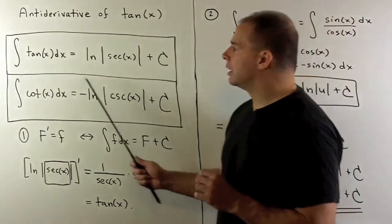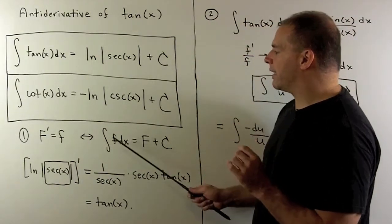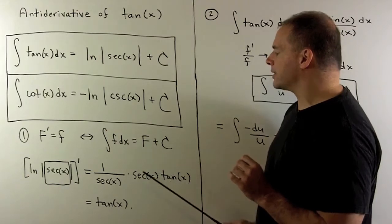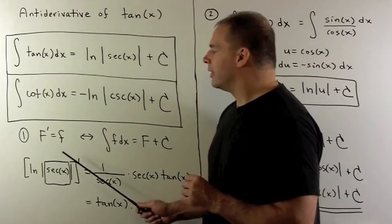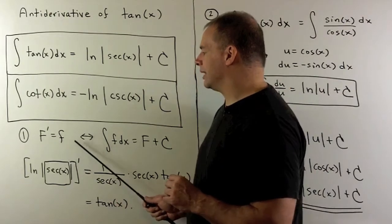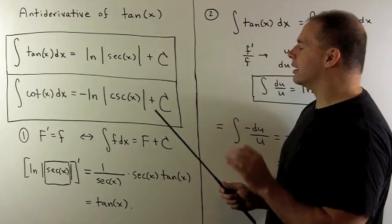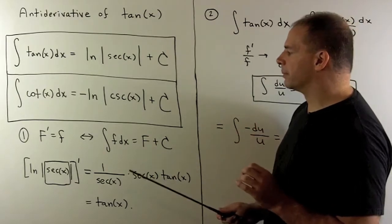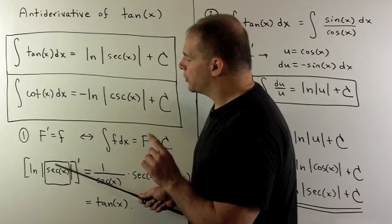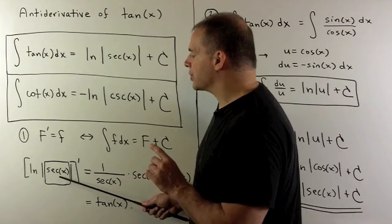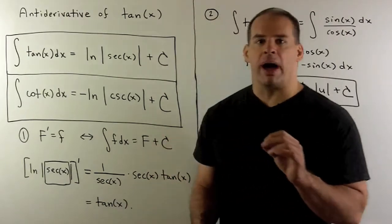First, let's check our formula. Recall, if we say that the indefinite integral of little f with respect to x is equal to capital F plus c, that's the same as saying that the derivative of capital F is equal to little f. So let's take the derivative of natural log of the absolute value of secant x. We're going to use the chain rule here. So let's put secant inside the box — we'll be taking the derivative of natural log of the absolute value of box.